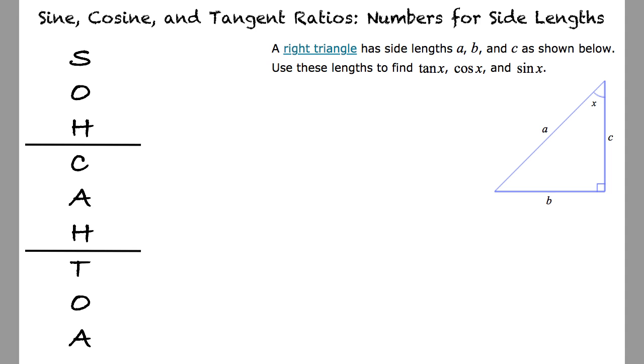A right triangle has side lengths a, b, and c as shown below. Use these lengths to find the tangent of x, the cosine of x, and the sine of x.